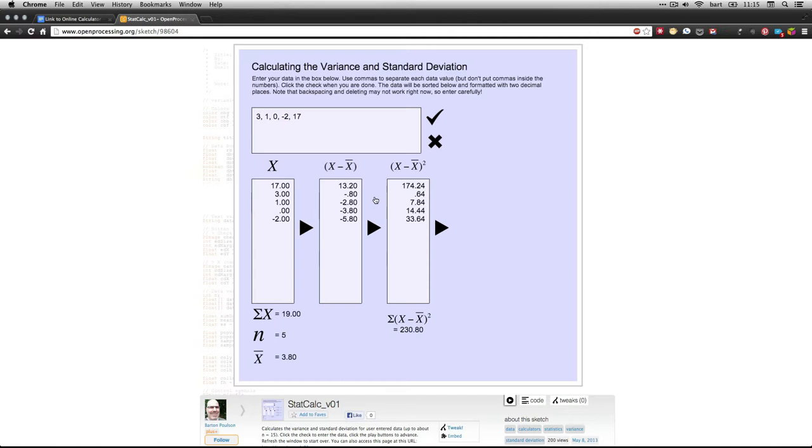So you click this last button here, and what it does is it brings up the population and the sample versions of the variance and the standard deviation. The top one, the sigma squared, is the population variance. So we've got the sum of squares there on the top divided by the N, the number of scores, and it's just going to be 46.16. The next one beneath that is the population standard deviation, and it's just the square root of the variance. So it's just sigma, and we've got that big formula, and it's equal to 6.79.